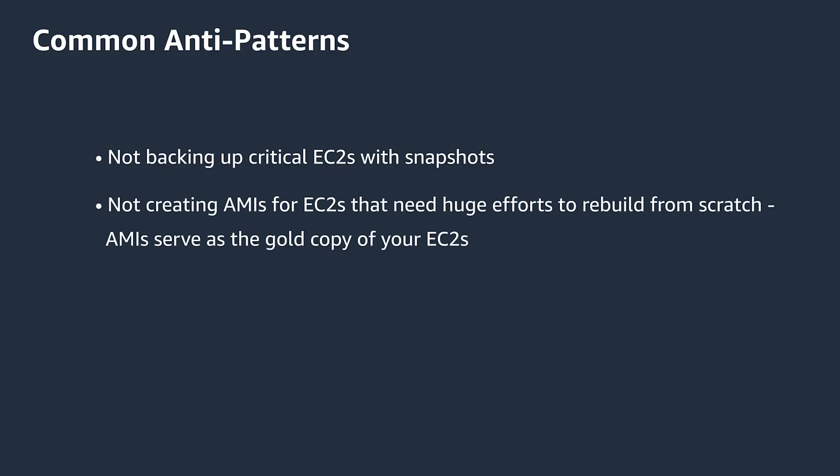This may cause one to lose all data in case of a manual intervention or service disruption. Not creating AMIs for EC2 instances that require huge effort to build from scratch — there is significant effort that goes into configuring your EC2 instance, such as installing the required libraries to host your application. If that EC2 instance gets accidentally terminated, you would need to start all over again. Use AMIs — they serve as the gold copy for your EC2 instances.